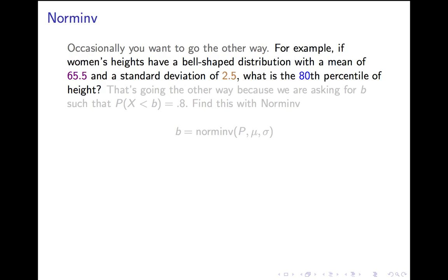Suppose you want to know the 80th percentile. Why do I say that's going the other way? Because you're asking, what's the number b such that if I put it into normdist, I'd get .8 out. Right? I'm inverting normdist there.